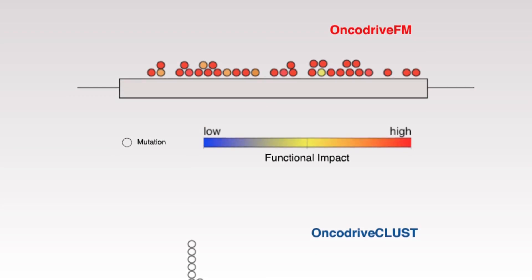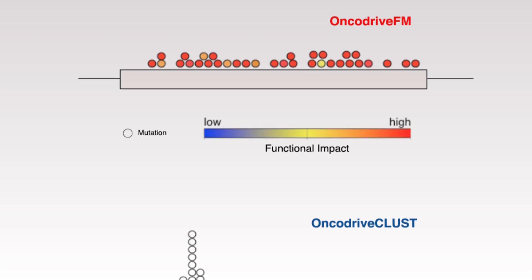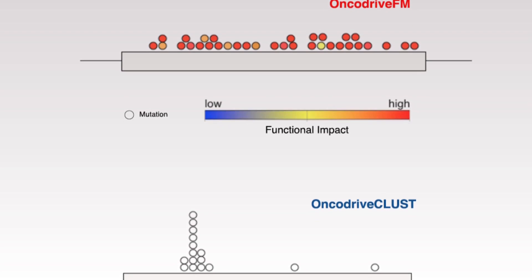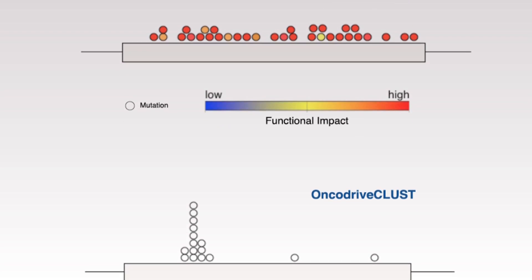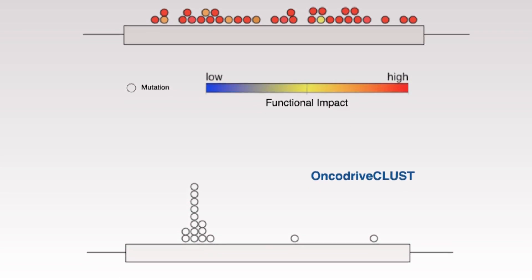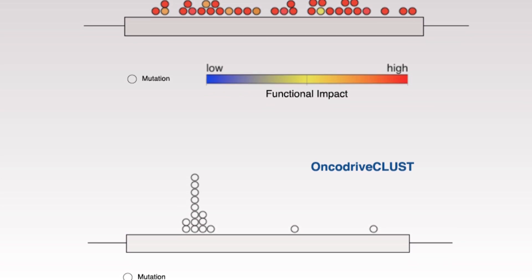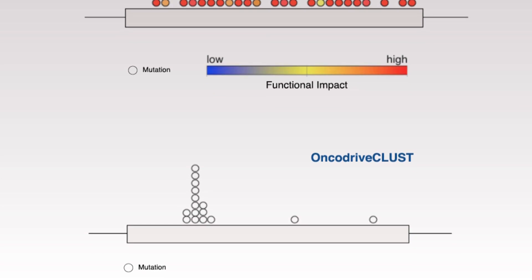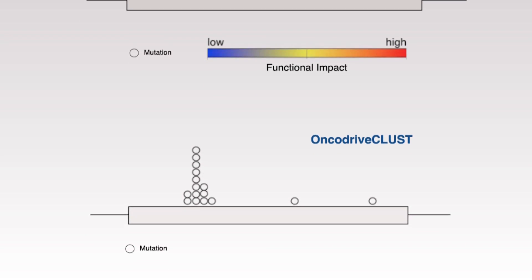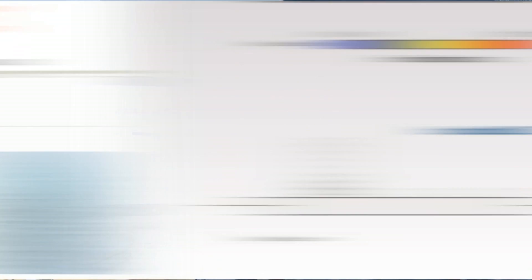In the figure, the panel in the top part represents one tumor suppressor detected by OncodriveFM, and the bottom panel represents an oncogene detected by OncodriveClust.